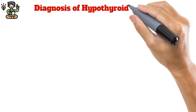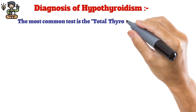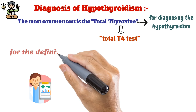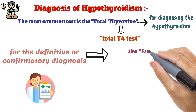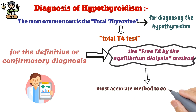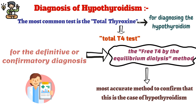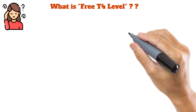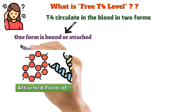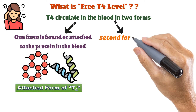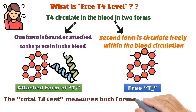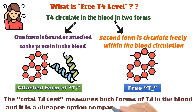For diagnosis, the most common test is the total T4 (total thyroxine) test. For a definitive or confirmatory diagnosis, however, free T4 measured by the equilibrium dialysis method is the most accurate. T4 circulates in the blood in two forms: one bound or attached to protein in the blood, and one that circulates freely within the blood.